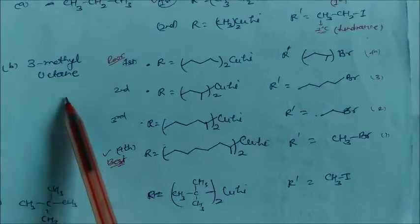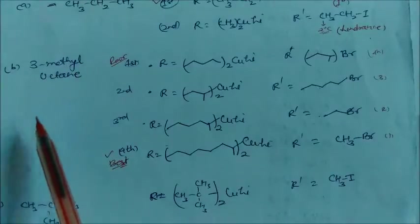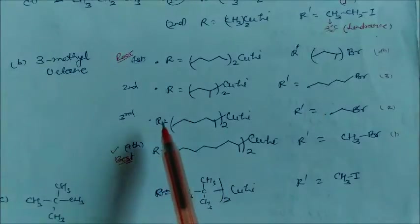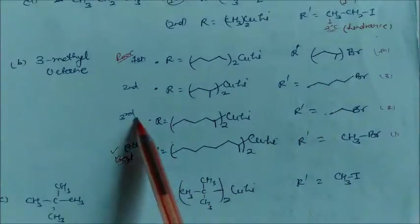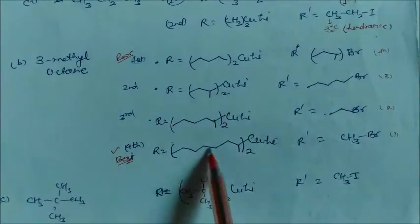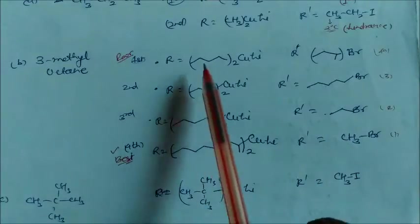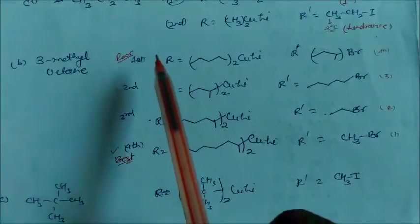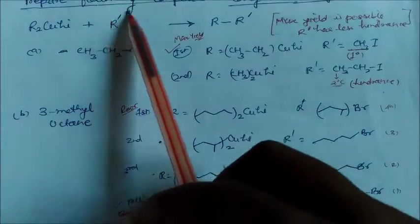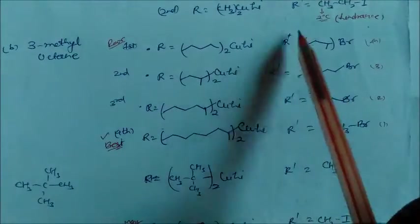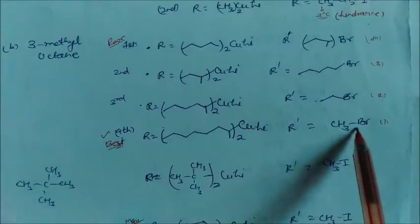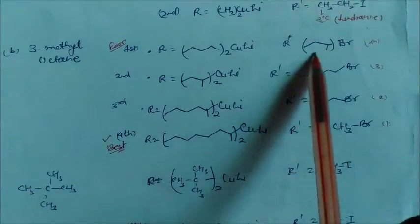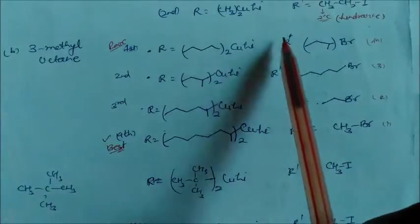Based on this, let us decide how to obtain 3-methyloctane. For 3-methyloctane there are different possibilities: R can be assigned in several ways, giving four possible combinations of R and R' groups. Our condition is that R' should have the least hindrance. In this case, you can see that only one choice gives the least hindrance at the carbon being attacked, so that arrangement gives the best product. The choice with a branched carbon has more hindrance and gives a poor result.